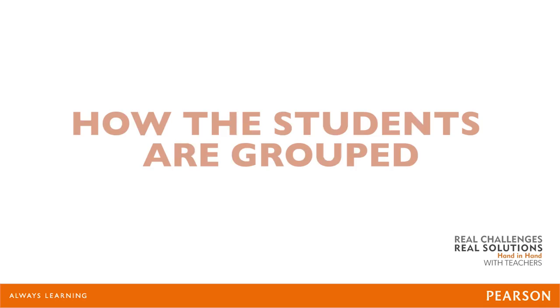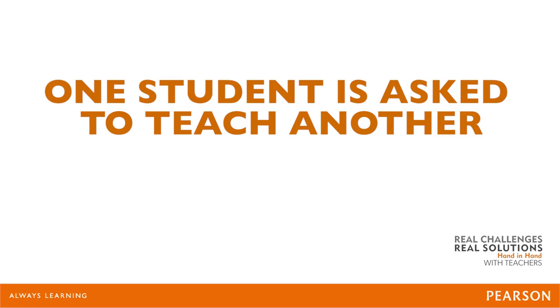Perhaps the most important consideration when teaching to varying levels of proficiency in lockstep is how the students are grouped. Research shows that extremely effective learning takes place when one student is asked to teach another. This is because in order to teach, known information must be reorganized in the brain. Thus, pairing more and less able students can actually benefit both parties.